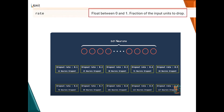We can control the dropping of neurons using a parameter called rate. This argument in the code tells you what fraction of neurons to drop, and it is a float value ranging between 0 and 1. For example, if you have 128 neurons in a hidden layer and use a drop rate of 0.1, it will drop 12 neurons; if 0.2, it will drop 25 neurons, and so on. But how do you decide the best dropout rate for your dataset?